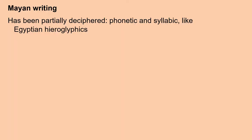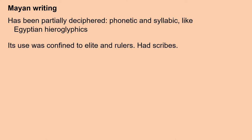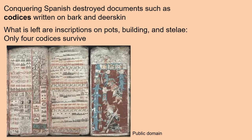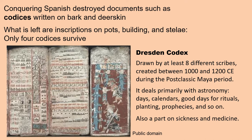Mayan writing has been partially deciphered, and it appears to be both phonetic and syllabic, like Egyptian hieroglyphics. Its use was confined to the elite and rulers, who used scribes to write it, so the common everyday person could not write. The conquering Spanish destroyed the Mayan documents, such as their codices written on bark and deer skin. Only four codices survive. What is left mostly are inscriptions on pots, buildings, and stelae. The Dresden Codex was drawn by at least eight different scribes sometime between 1000 and 1200 Common Era, during the post-classic Mayan period, and it deals primarily with astronomy, calendars, rituals, planting, prophecies, and medicine.